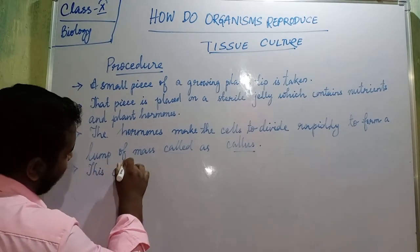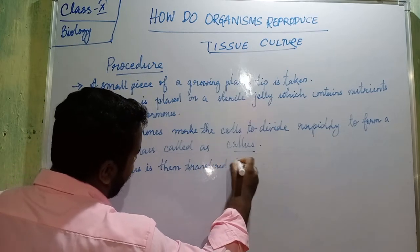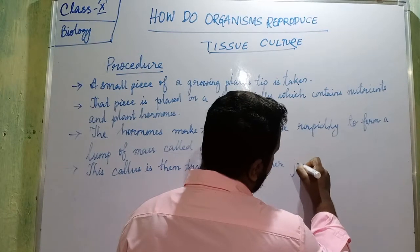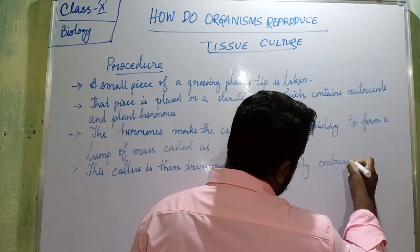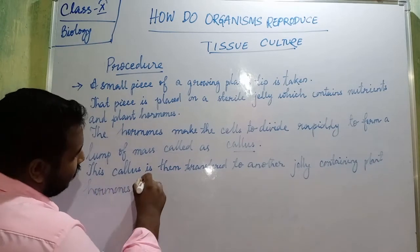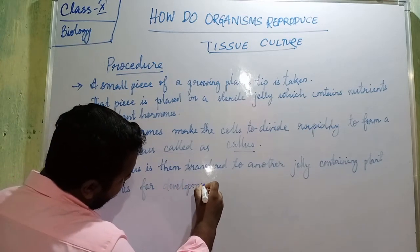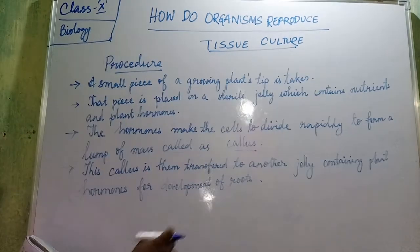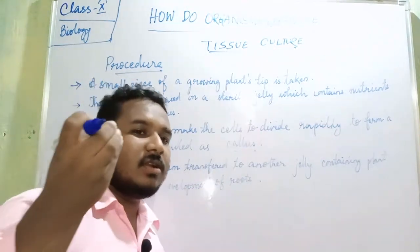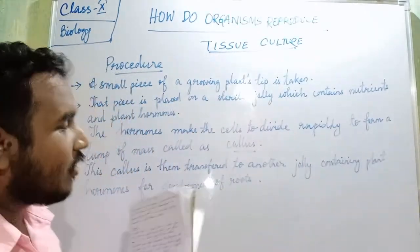Then this callus is transferred to another jelly containing plant hormones for the development of roots. A separate beaker or container is used, and the callus is placed there for root development, because some more plant hormones are present there.